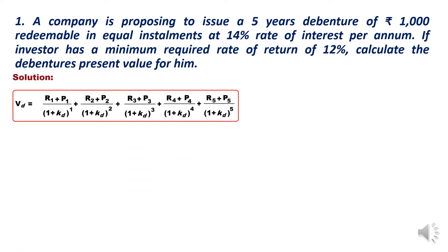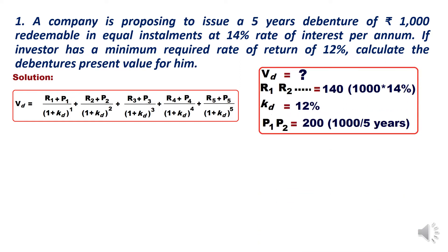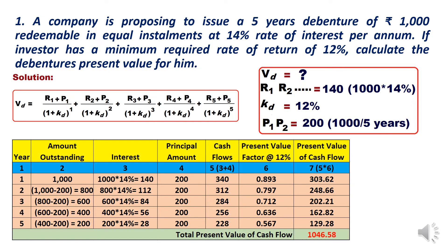For the solution, the formula remains the same — Vd as shown. We need to calculate Vd. R1, R2 = 140, calculated as 1000 into 14 percent, which is the coupon rate of interest. Kd is 12 percent. P1 through P5 equals 200 rupees — that is the annual installment of redemption, 1000 divided by 5 years. For this calculation I have prepared a table.